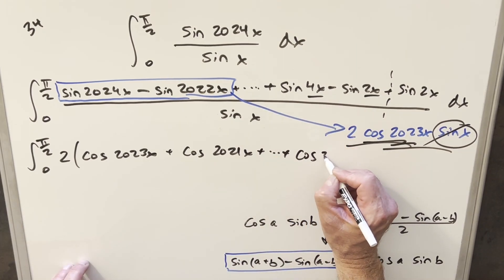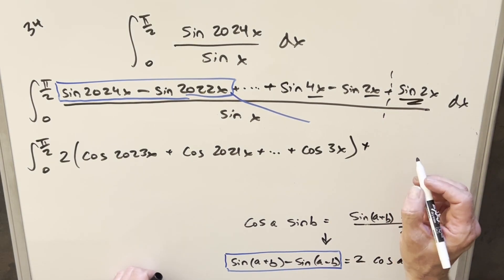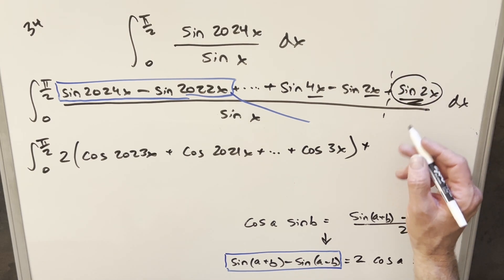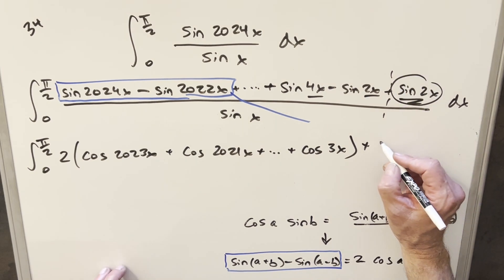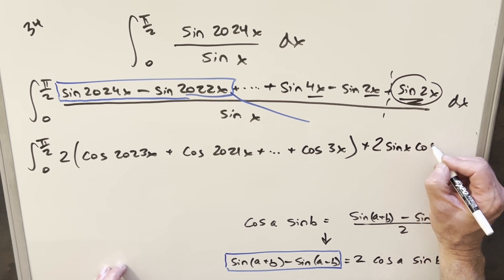And now I'm going to deal with this sine 2x right here. But we can't deal with it the same way because we're just looking at one sine function here. But it's really okay because sine 2x, we can use double angle formula on this and write it as 2 sine x cos x.